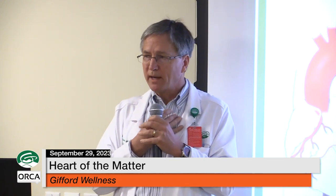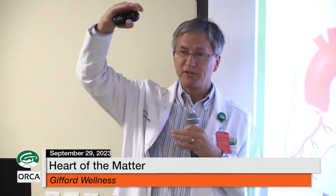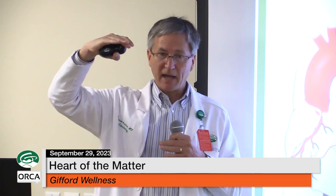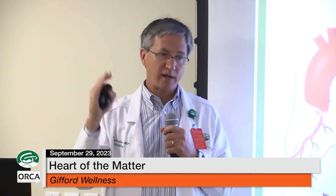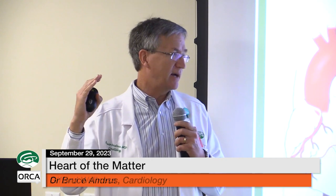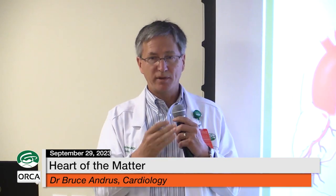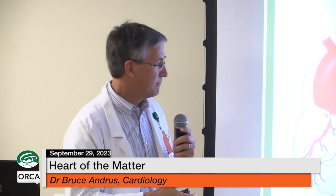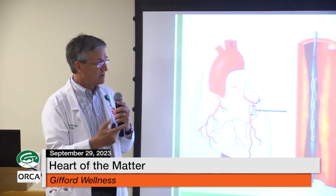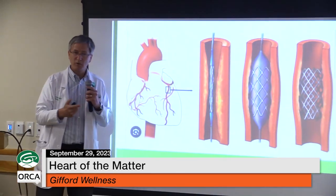If someone arrives in the emergency room with unremitting chest discomfort and the EKG suggests the vessel is completely blocked, it's a five-alarm fire. We try to get that patient into a cath lab within 90 minutes. If that can't be done due to distance, weather, or transportation, the patient is given thrombolytic — clot-busting — medications, but getting to a cath lab within 90 minutes is generally thought to be safer and more effective.